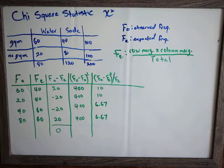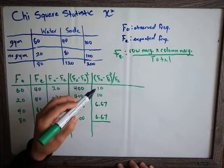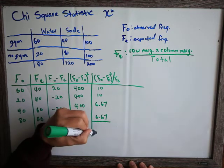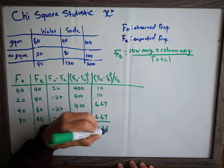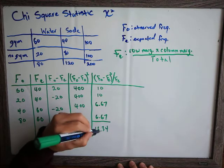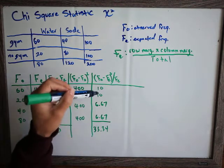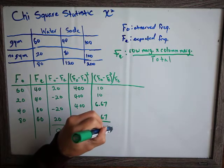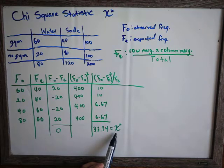The last thing to do to calculate the chi-square is add up the final column. That's 10 plus 10 plus 6.67 plus 6.67, which is 20 plus 13.34, giving us 33.34. That is our chi-square statistic — represented by the capital Greek letter chi, squared.